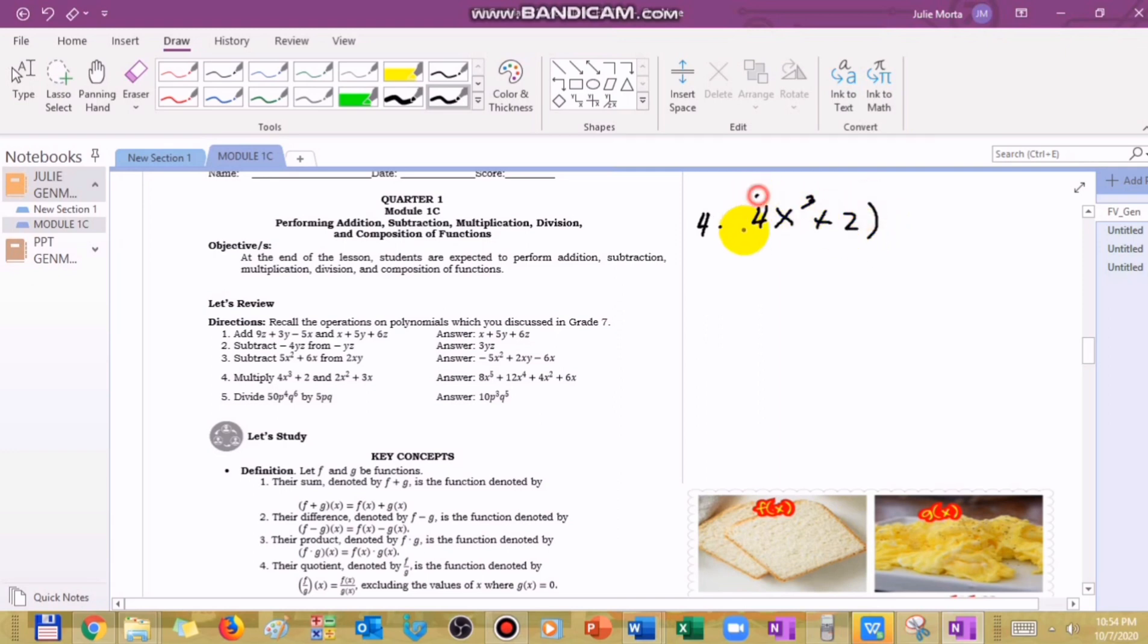We have 4x cubed plus 2, multiply by 2x squared plus 3x. We distribute: 4x cubed times 2x squared becomes 8x raised to 5, you add the exponent. Then 4x cubed times 3x becomes 12x raised to 4. Then the second term: 2 times 2x squared becomes 4x squared, and 2 times 3x is plus 6x.